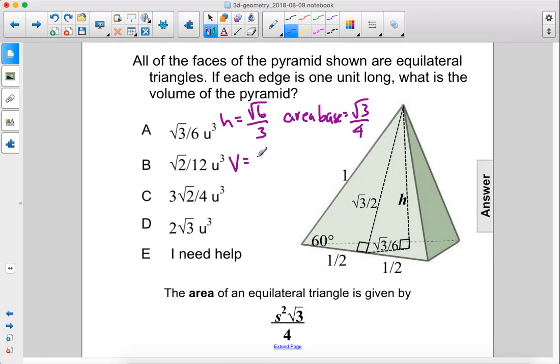Therefore the volume is the square root of 6 over 3 times the square root of 3 over 4 times 1 over 3, since we're dividing by 3. So that becomes the square root of 18 over 36.